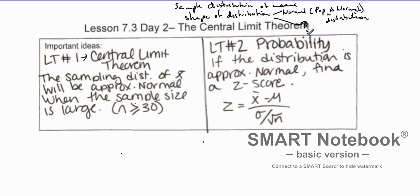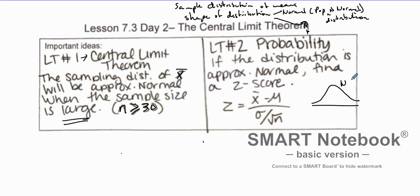If you don't know whether a sampling distribution of means is normal, you can use the Central Limit Theorem. The Central Limit Theorem states that a sampling distribution of the sample mean X̄ will be approximately normal when the sample size is very large — traditionally, when the sample size is greater than or equal to 30. If it's approximately normal, we can find probabilities by calculating the z-score and using the normal distribution with our sampling mean and standard deviation of the means.